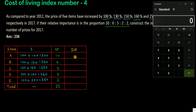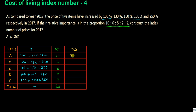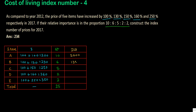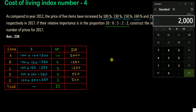Now prepare the IW column — the product of I and W. First: 200 into 10 equals 2000. Second: 230 into 6 equals 1380. Third: 250 into 5 equals 1250. Fourth: 260 into 2 equals 520. Fifth: 350 into 2 equals 700. Sigma IW equals 2000 plus 1380 plus 1250 plus 520 plus 700, which is 5850.